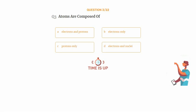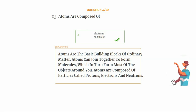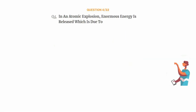The correct answer is Option D: Electrons and nuclei. Atoms are the basic building blocks of ordinary matter. Atoms can join together to form molecules, which in turn form most of the objects around you. Atoms are composed of particles called protons, electrons and neutrons.